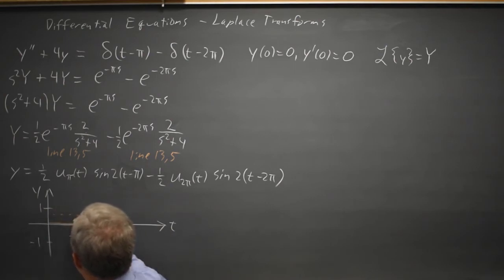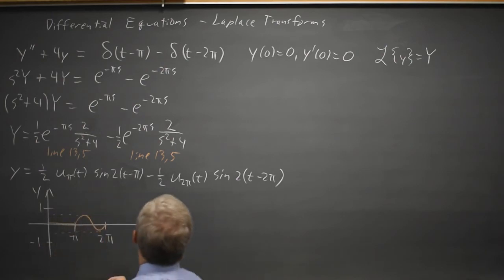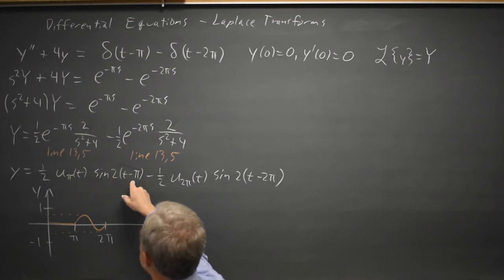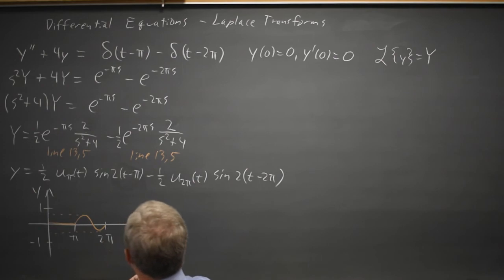And then I subtract, and my sin has been shifted to the right a full period. I get a full period by time 2 pi, and at this point I have a unit impulse in the downward direction.